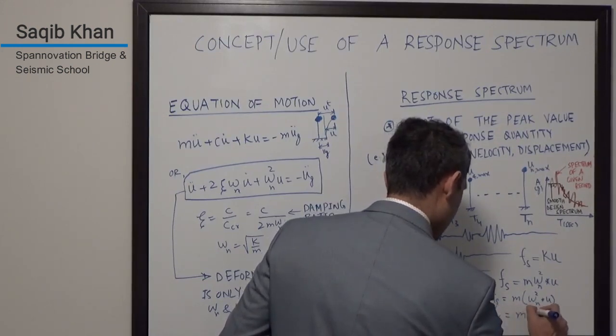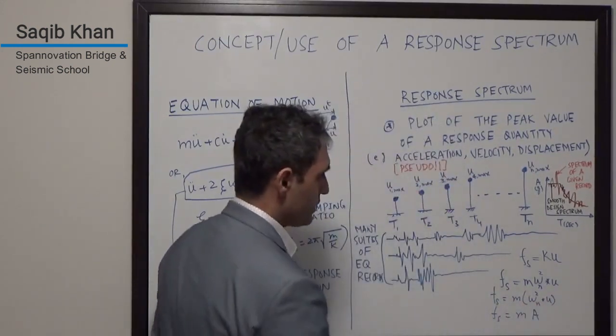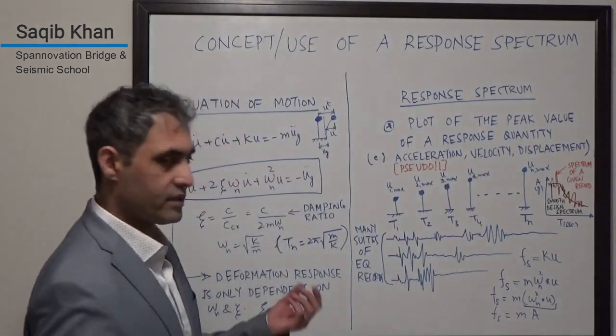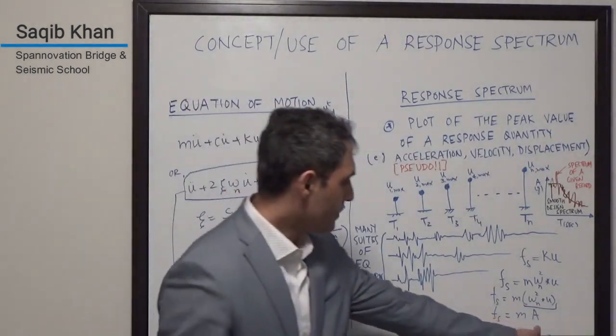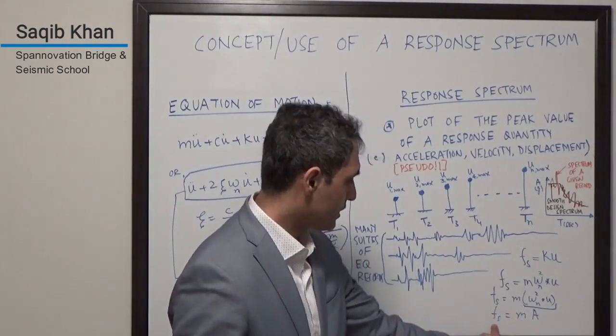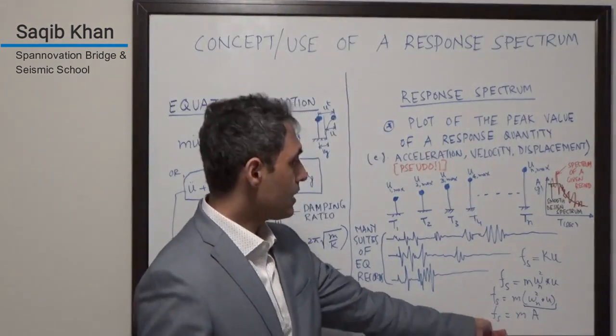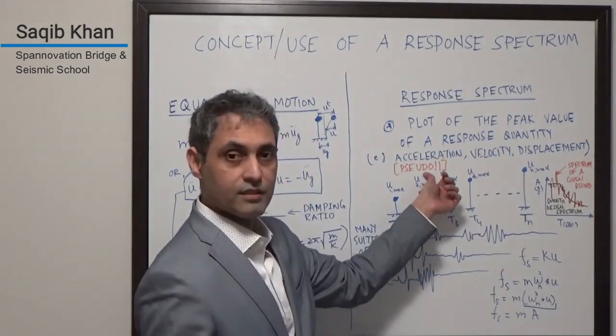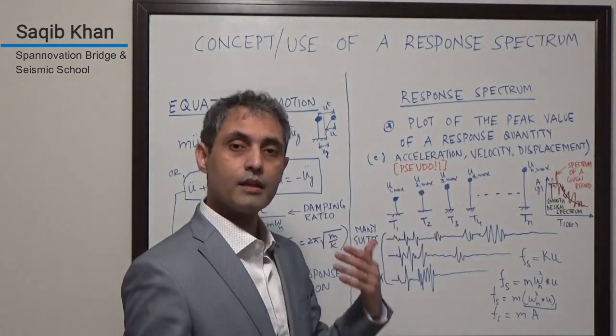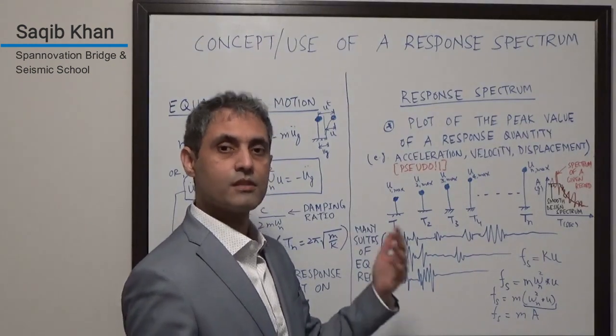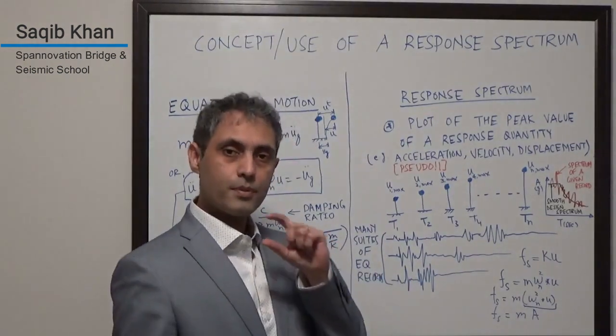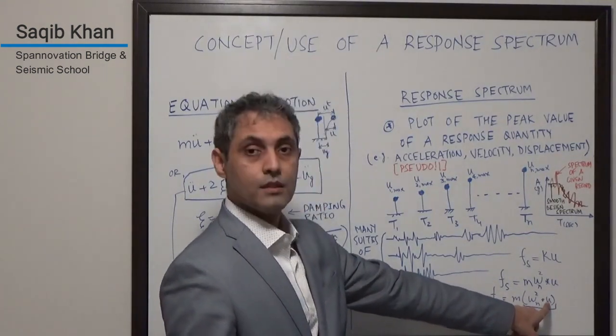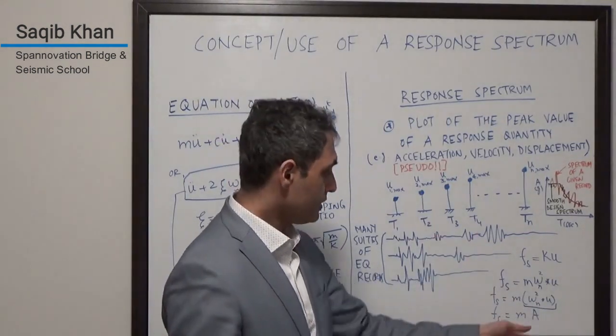And I could think of this omega N squared times U as a pseudo-acceleration. This is something that you multiply with the mass to get the force. And this is how an acceleration spectrum, which is really a pseudo-acceleration spectrum, because this is not an acceleration that the system is actually experiencing. It is just a proxy that you have, that you come up with, using the displacement from your many, many analyses.